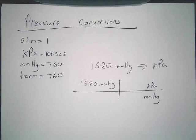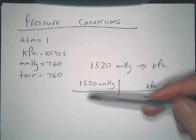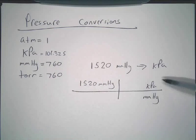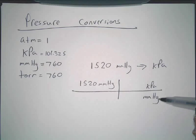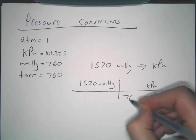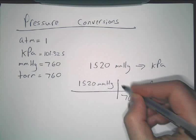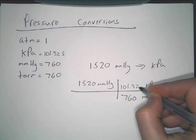So now what you plug in, you simply take whatever your stuff is over here and just plug them in for their respective units. So millimeters of mercury, 760. KPA, 101.325.